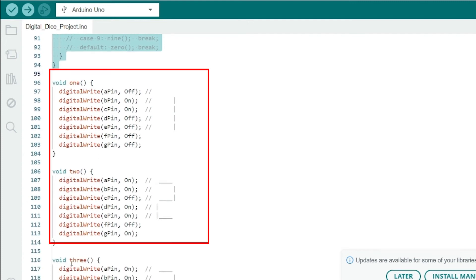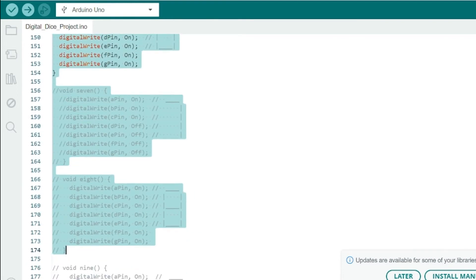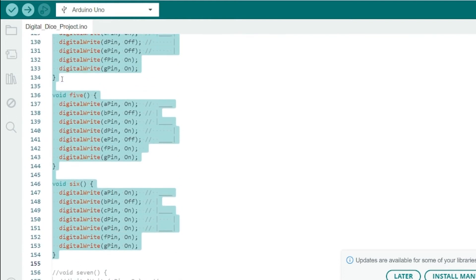The show number function lights up the appropriate segments on the seven segment display to show the generated number. It calls helper functions like one, two, etc., which define the segments to be lit for each number. Each of these functions sets the state of the pins to light up the correct segments for each number.